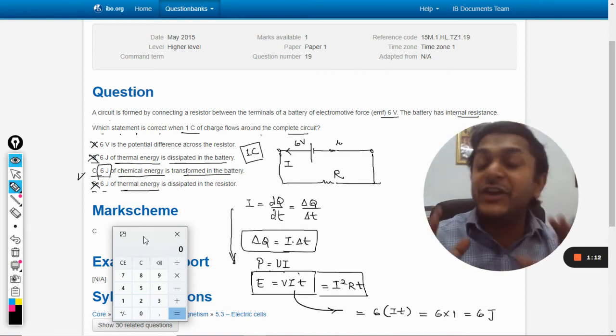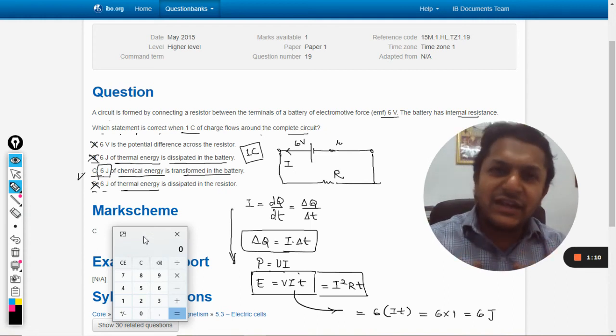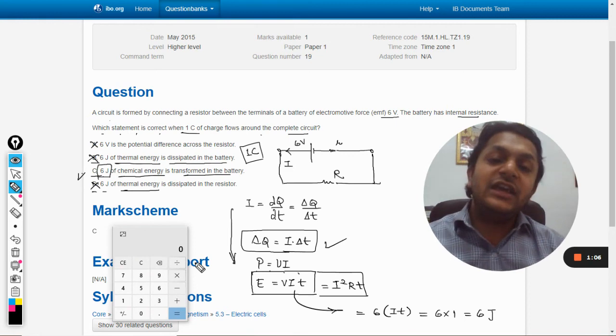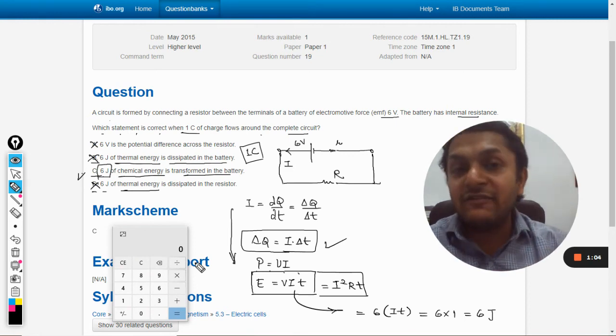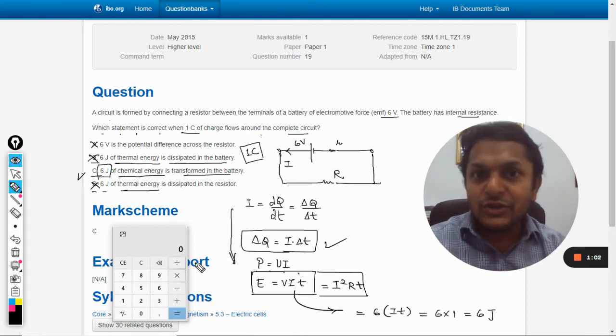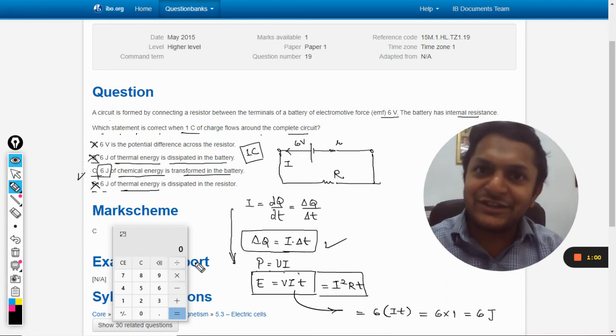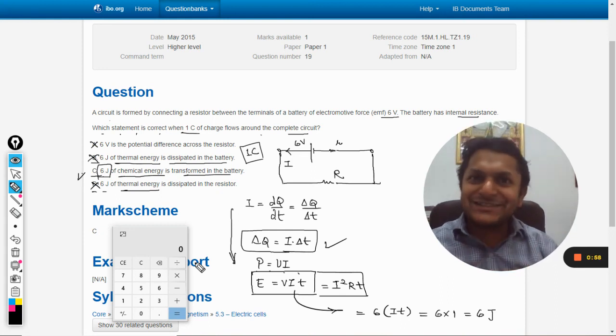And this is, I will say, a very beautiful question. By just having a very simple concept that is ΔQ is equal to IΔt, they have actually increased the level of a simple question. So this is the beauty of IB, I will say. So all the best, bye.